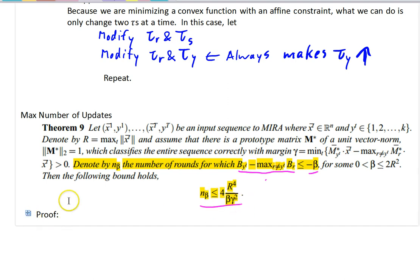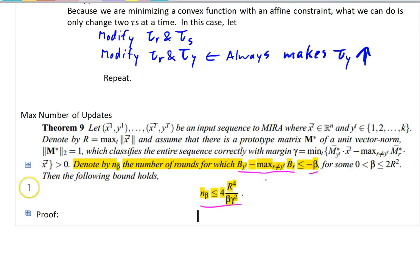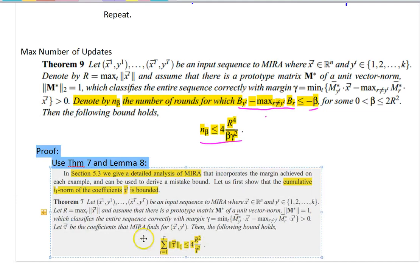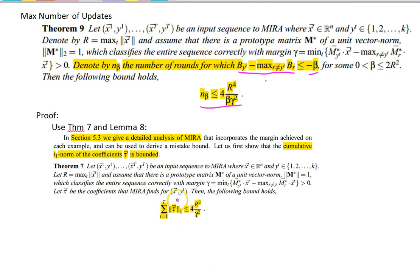And so the number of rounds in which that occurs is going to be less than or equal to this. And this is just going to be combining. We know we have a minimum update size, and we're going to combine that with theorem 7 from earlier, which says that the 1 norm is less than or equal to this.